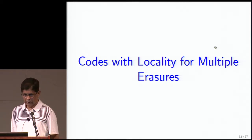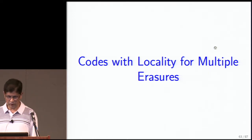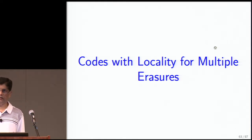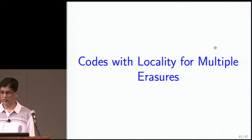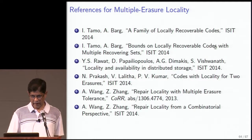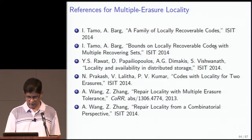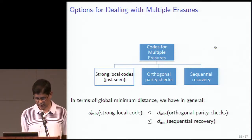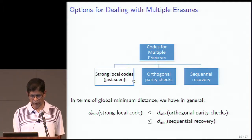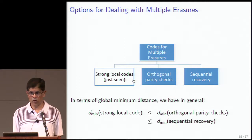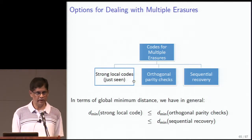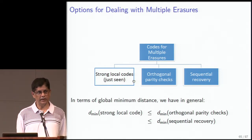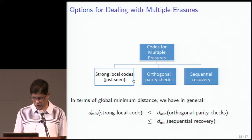Now I'll talk about recent work on locality — moving beyond single erasures to multiple erasures. There seem to be three options for dealing with multiple erasures. The first is the strong local codes approach: taking what Parikshit's team had done and extending it to more powerful local codes with higher minimum distance. But a team from China pointed out that if you want to repair multiple erasures with locality that approach doesn't give the best minimum distance — they improved upon it by designing codes where every code symbol is protected by multiple local codes.